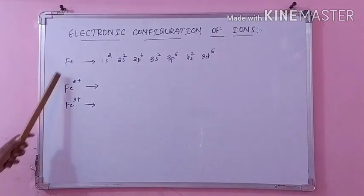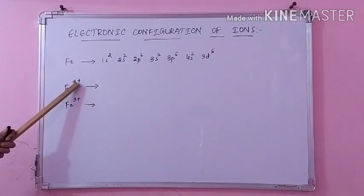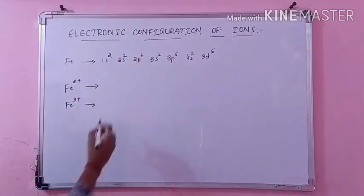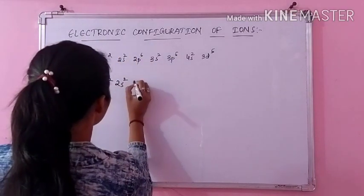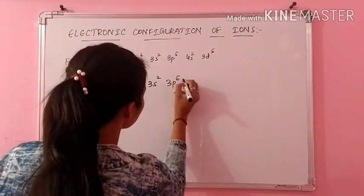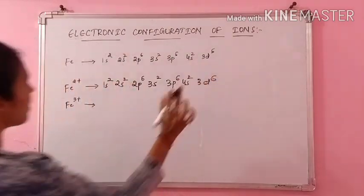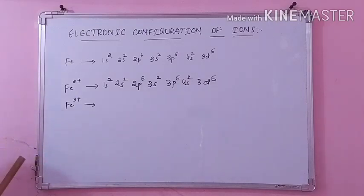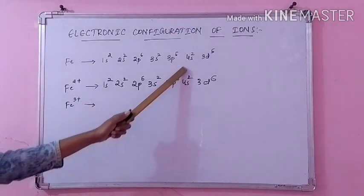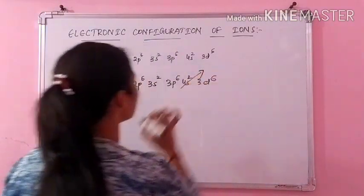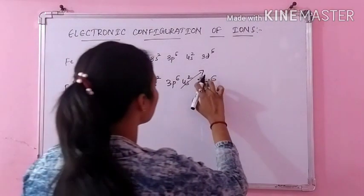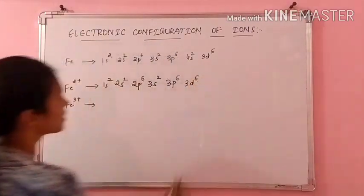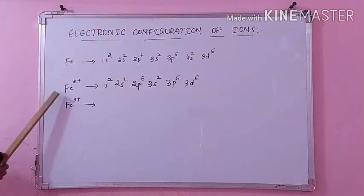Now first we will discuss Fe2+. If there is a positive charge, then you have to subtract two electrons. So as it is with Fe neutral, I will write the whole complete configuration the same. Now since it is having 2+, I have to subtract two electrons. So we have to remove those two electrons from the S orbit — from this energy level. So I am completely removing this 4S2, and you are remaining with 3D6. So I will write this 3D6. This is nothing but the configuration of Fe2+.